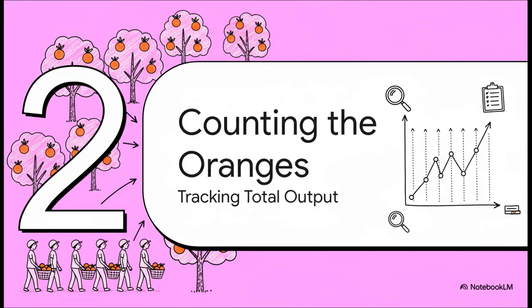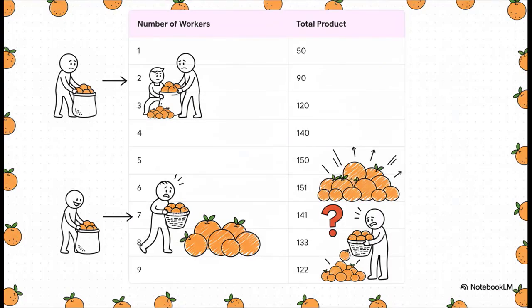How do we find the perfect number of workers? We need to look at the data. Let's start by tracking the total output, the total number of oranges picked, as we add workers one by one. With one worker, they pick 50 oranges. A second worker brings the total to 90. Things are looking good. The total keeps climbing: 120, 140, 150. And then it peaks at 151 with the sixth worker. But then something really weird happens. When the seventh worker joins, the total actually drops to 141. How is that even possible?